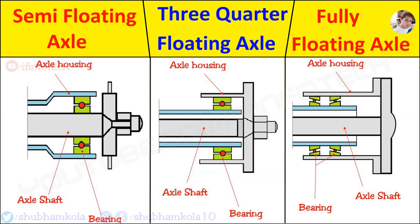Construction of different types of axle used in automobile vehicles. There are three types of axle: semi floating axle, fully floating axle, and three quarter floating axle.